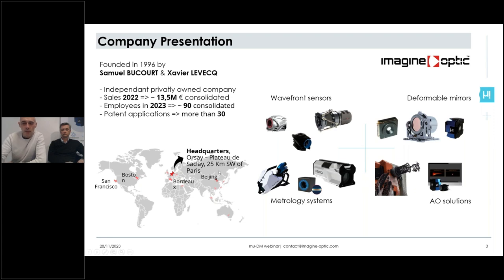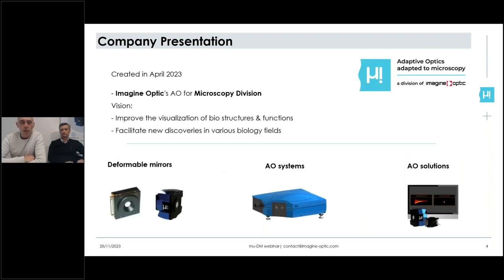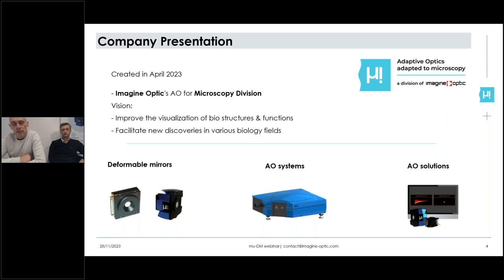A couple of words about MuImaging, which is a very recent microscopy division of Imagine Optics that focuses on the application of adaptive optics into microscopy. The vision of this division is to improve the visualization of bio-structures and functions through the use of adaptive optics, and to facilitate research in various biology fields. The division will provide the latest innovation in terms of deformable mirrors, wavefront sensors, and adaptive optics systems and solutions for research and industry.